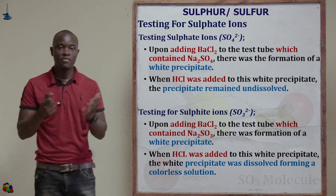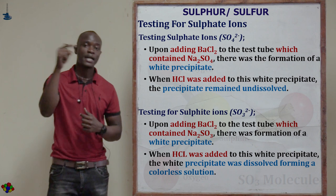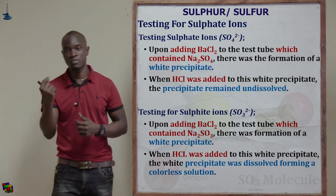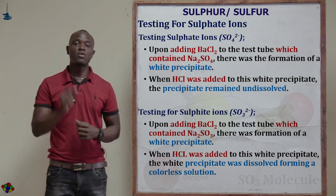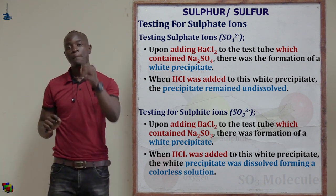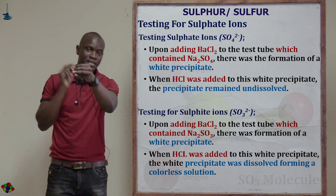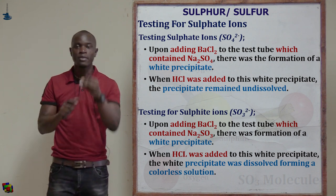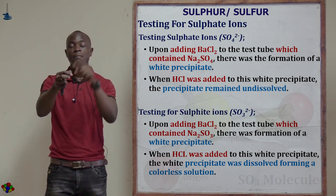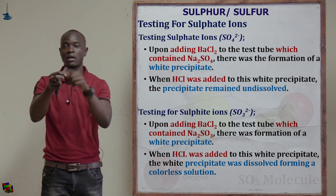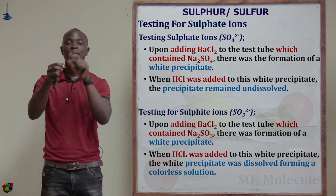The second observation concerns the addition of hydrochloric acid. When dilute hydrochloric acid was added to the test tube containing barium sulfate — the precipitate from the sulfate — nothing happened; the white precipitate remained and did not dissolve. But when hydrochloric acid was added to the test tube containing barium sulfite — the precipitate from the sulfite — the white precipitate immediately dissolved.